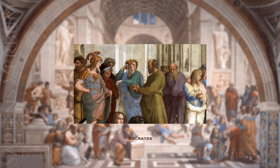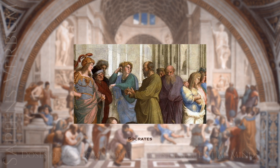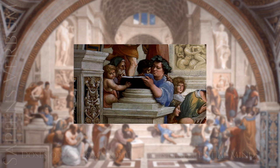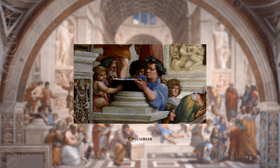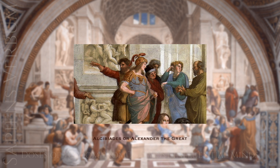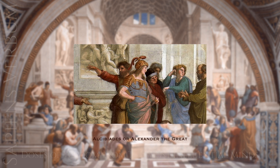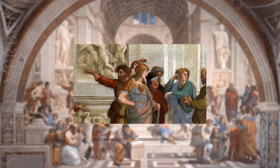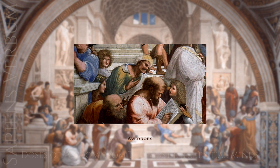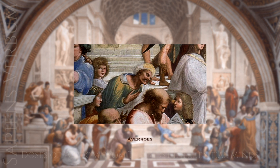Socrates was a philosopher known for his method of questioning to explore ethical and moral issues, and was famously put to death for corrupting the youth and impiety. Epicurus believed that pleasure was the highest good and also believed in the existence of atoms and an infinite universe. Alcibiades was an Athenian general and politician known for his charisma. Alexander the Great was a military leader who conquered much of the known world and spread Greek culture. Averroes was a philosopher and jurist from Islamic Spain known for his commentaries on Aristotle.